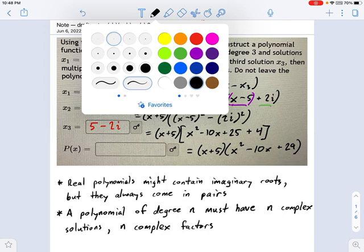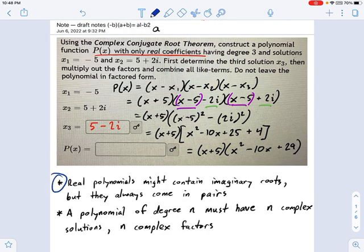I just want to wrap up with a couple of notes about the complex conjugate root theorem. So here's what I'm talking about: real polynomials might contain imaginary roots like this one. There's a root with an imaginary part here, and that doesn't mean the polynomial is not real. It just means one of the roots of it is imaginary. Now, the restriction is if you see one root that's imaginary, you know there's going to be another one. They come in pairs.